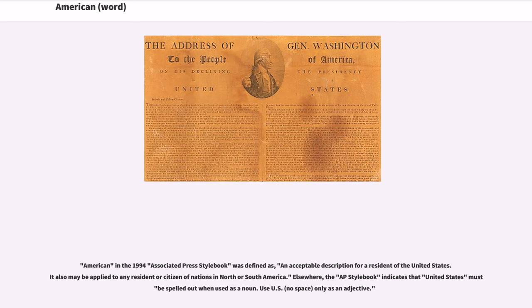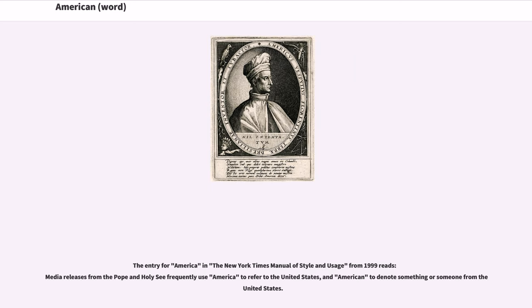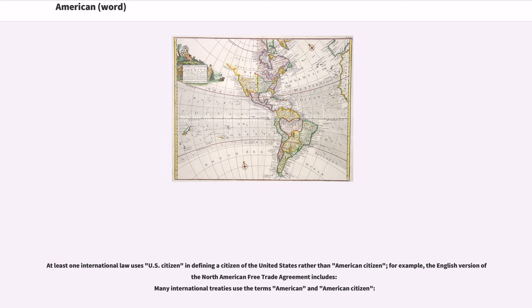American in the 1994 Associated Press style book was defined as an acceptable description for a resident of the United States. It also may be applied to any resident or citizen of nations in North or South America. The AP style book also indicates that United States must be spelled out when used as a noun, and that U.S. (no space) should only be used as an adjective. The entry for America in the New York Times Manual of Style and Usage from 1999 notes that media releases from the Pope and Holy See frequently use America to refer to the United States and American to denote something or someone from the United States. At least one international law uses U.S. citizen in defining a citizen of the United States rather than American citizen — for example, the English version of the North American Free Trade Agreement.